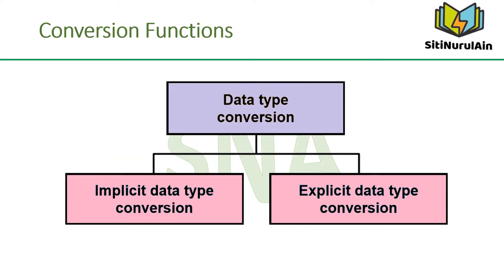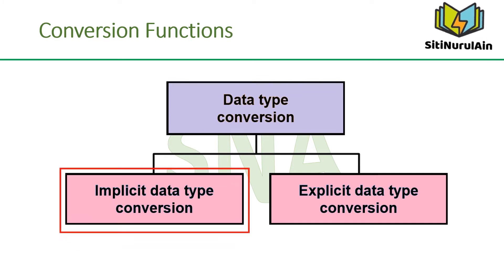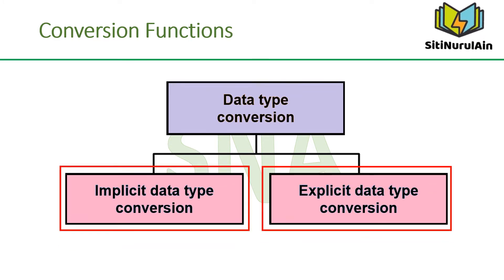In some cases, the Oracle server receives data of one data type where it expects data of a different data type. When this happens, the Oracle server can automatically convert the data to the expected data type. This data type conversion can be done implicitly by the Oracle server or explicitly by the user. Implicit data type conversions work according to the rules, while explicit data type conversions are done by using the conversion functions.